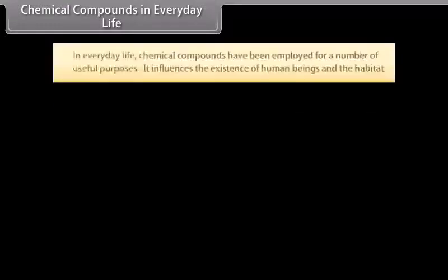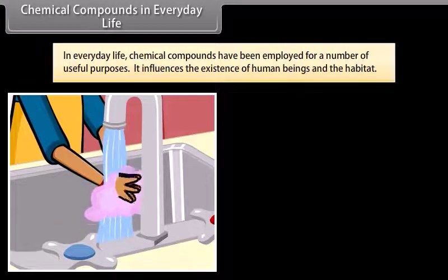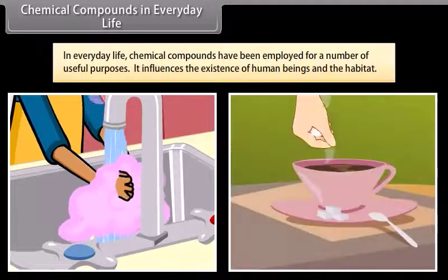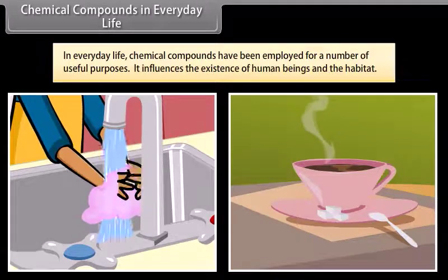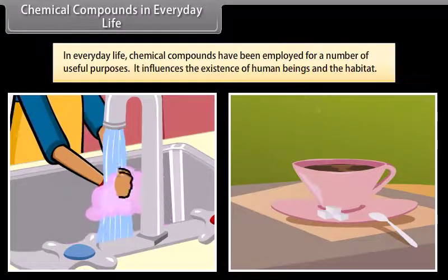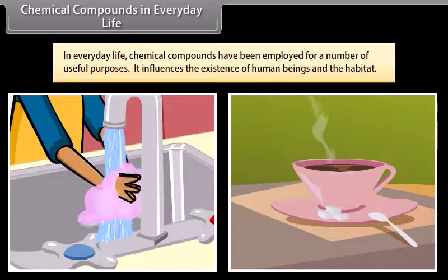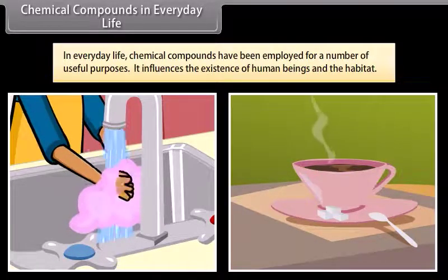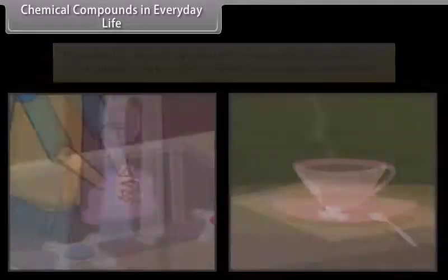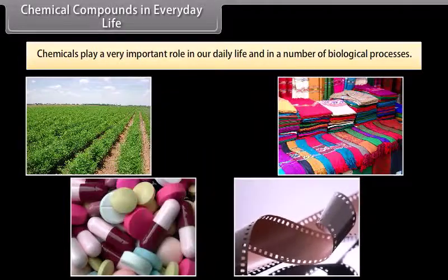Chemical compounds in everyday life: In everyday life, chemical compounds have been employed for a number of useful purposes. For example, sugar is used to sweeten tea; soaps are used for washing and bathing. It influences the existence of human beings and the habitat. A number of compounds also find application in agriculture, textiles, medicines, photography, etc. Thus, chemicals play a very important role in our daily life and in a number of biological processes.